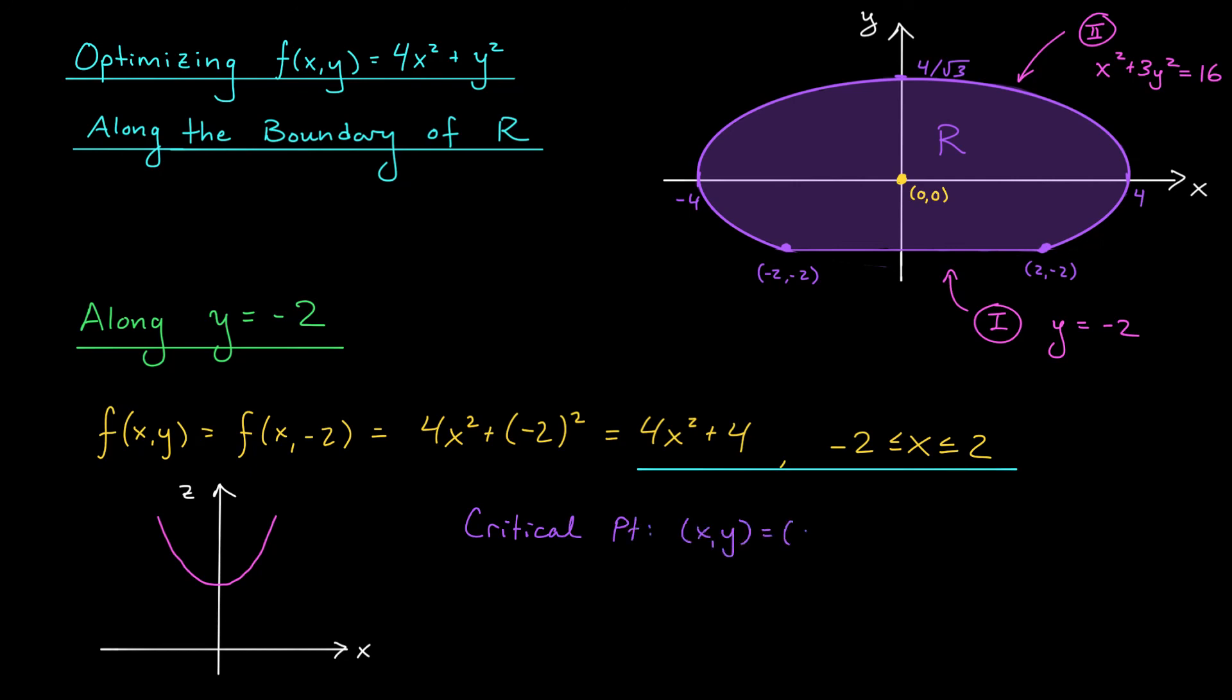Now, are we done with this line segment? No! Remember, we also have to consider the endpoints of our closed interval. These endpoints occur when x is minus 2 or x is 2. And of course, y is equal to minus 2 over the entire line segment. So we've therefore obtained three candidates for the location of our function's max and min along the line segment, the points (0, -2), (-2, -2), and (2, -2). We'll put these points aside for the meantime, as we examine our function along the other boundary component, the ellipse.